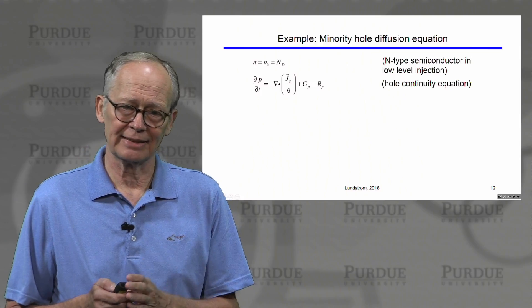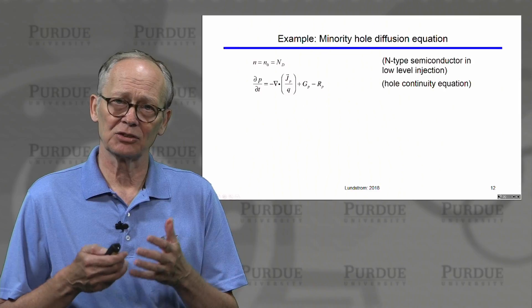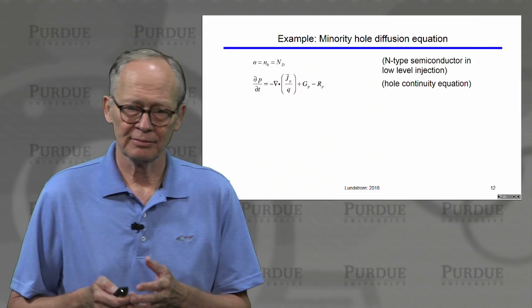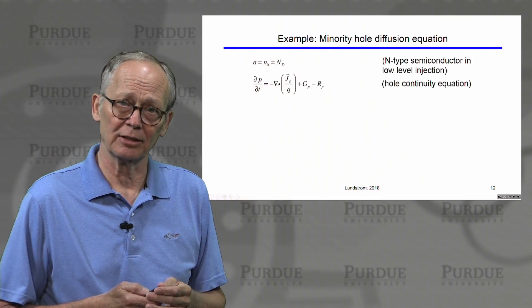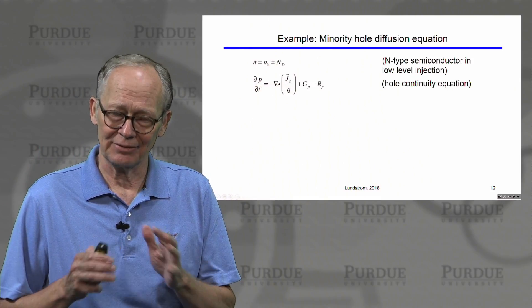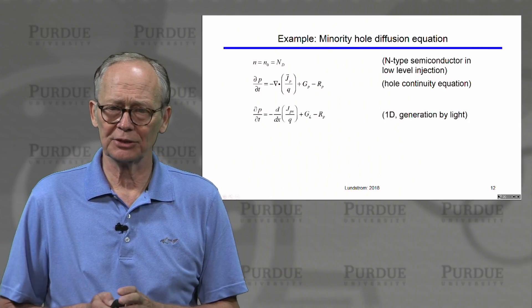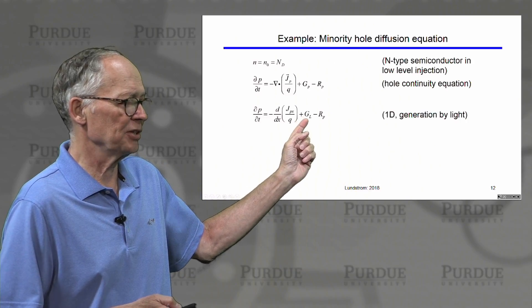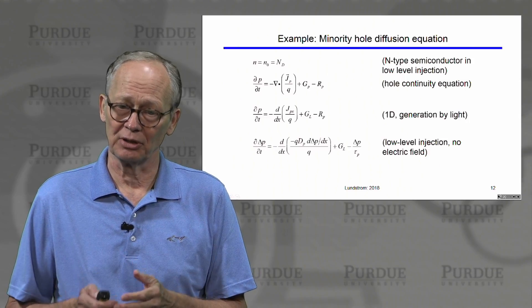Here's an example of an n-type semiconductor and we're interested in solving those equations for minority carrier holes. We know the electron concentration. We don't need to solve anything there because in low-level injection, everything stays the same for the majority carriers. We write down the hole continuity equation. If we assume optical generation, we simply specify that the generation process is generation due to light.